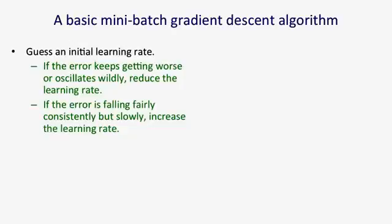You also look to see if the error is falling too slowly. You expect that the error might fluctuate a bit if you measure it on a validation set because the gradient on each mini-batch is just a rough estimate of the overall gradient. So you don't want to reduce the learning rate every time the error rises. But what you're hoping is the error will fall fairly consistently. And if it's falling fairly consistently and very slowly, you can probably increase the learning rate.